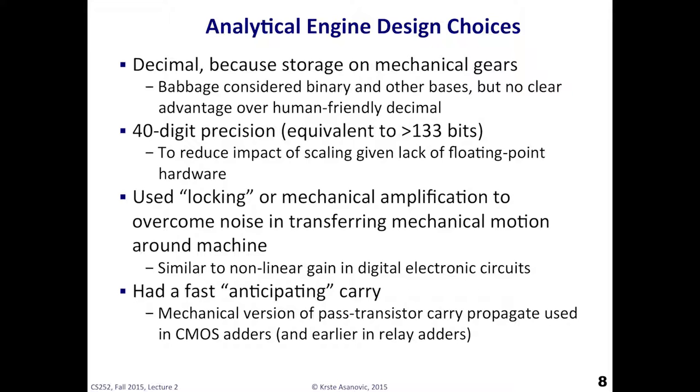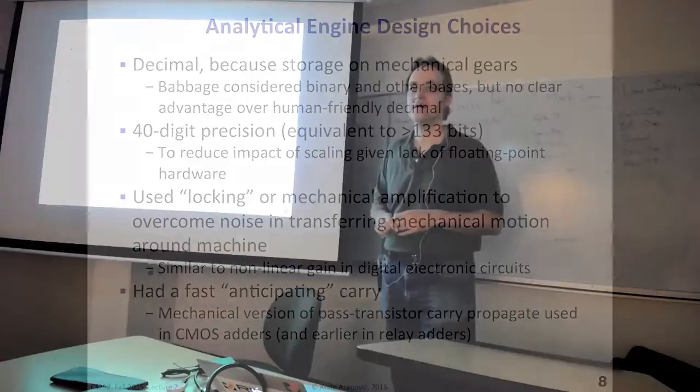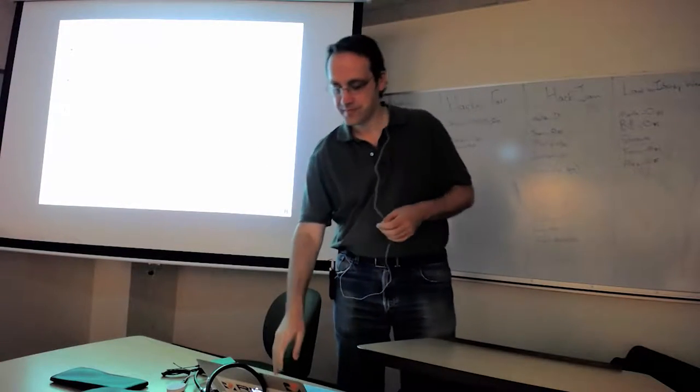Another design was digit and had 40-digit precision. This is basically 133 bits in each word. And the reason he went that high was it was a fixed point machine and there wasn't any floating point. And this was designed to make it easy to map problems to the machine without worrying about scaling. Now some other interesting sort of technology things, he had to invent a bunch of mechanical ideas. And this idea of locking was a form of non-linear mechanical amplification. And this was to overcome noise in moving things around the machine. So remember, building a digital computer, it's important to cancel out noise by having thresholds and picking whether it's above or below a threshold. And he did this mechanically.